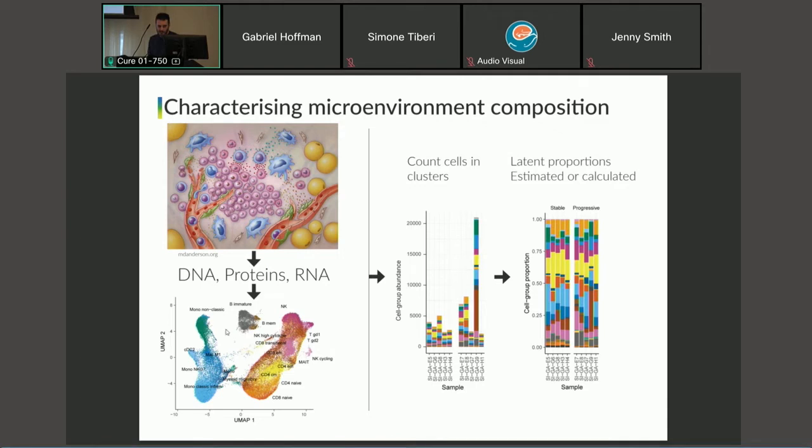While we are familiar with this 2D representation, we can cluster cells based on their similarity. The compositional data itself is quite simple. We count the number of cells in each cluster for each sample. In the x-axis, we have 10 samples here. For some samples, we have collected a lot of cell types, and for others, not so much.